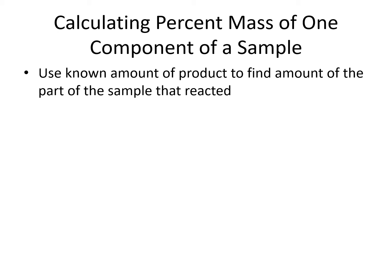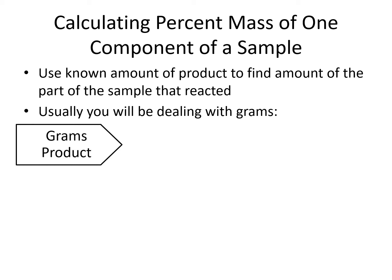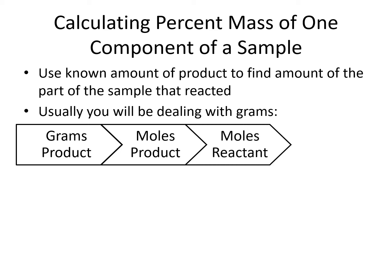Since these are lab techniques, we will typically be dealing with grams, which means we'll have to do gram-to-mole and mole-to-gram conversions in addition to using stoichiometry. We would go grams of product to moles of product using the molar mass of the product, then moles of product to moles of the reactant we're interested in using stoichiometry, then moles of the reactant to grams of the reactant using the molar mass of the reactant.